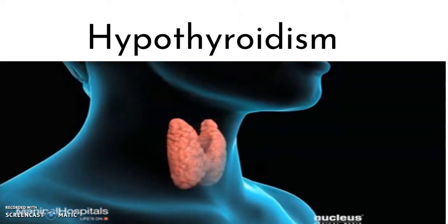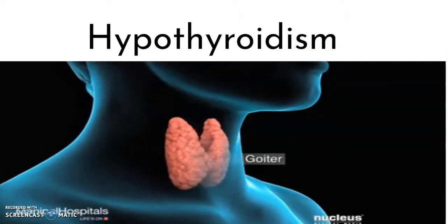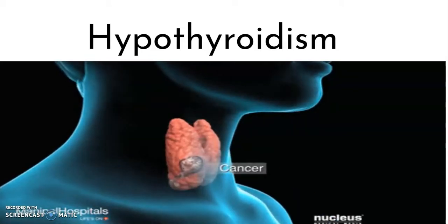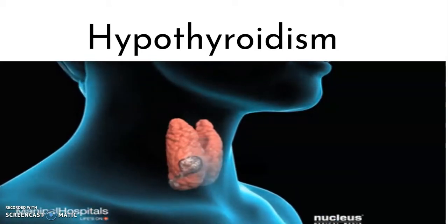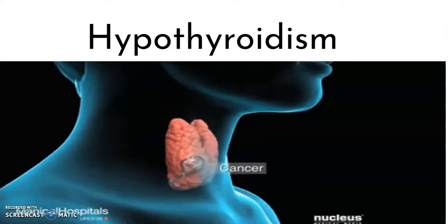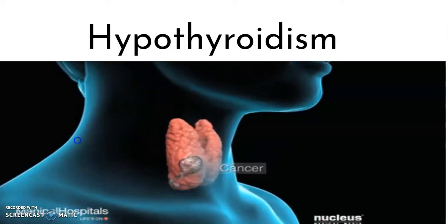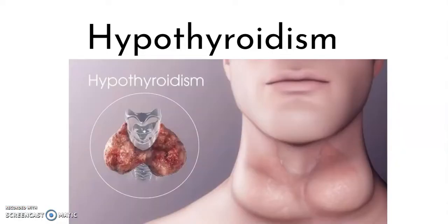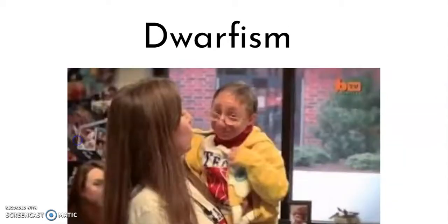Hypothyroidism can cause low growth because the thyroid gland is not producing enough thyroid hormone, which is necessary to support normal growth. Dwarfism results from abnormal growth of the bones and cartilage in the body.